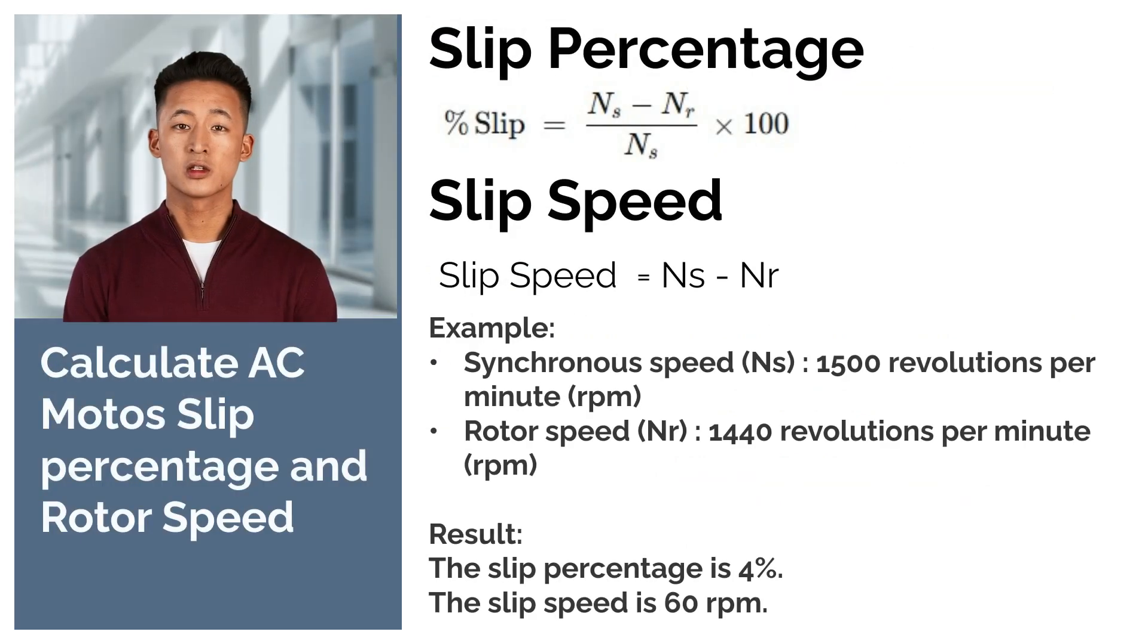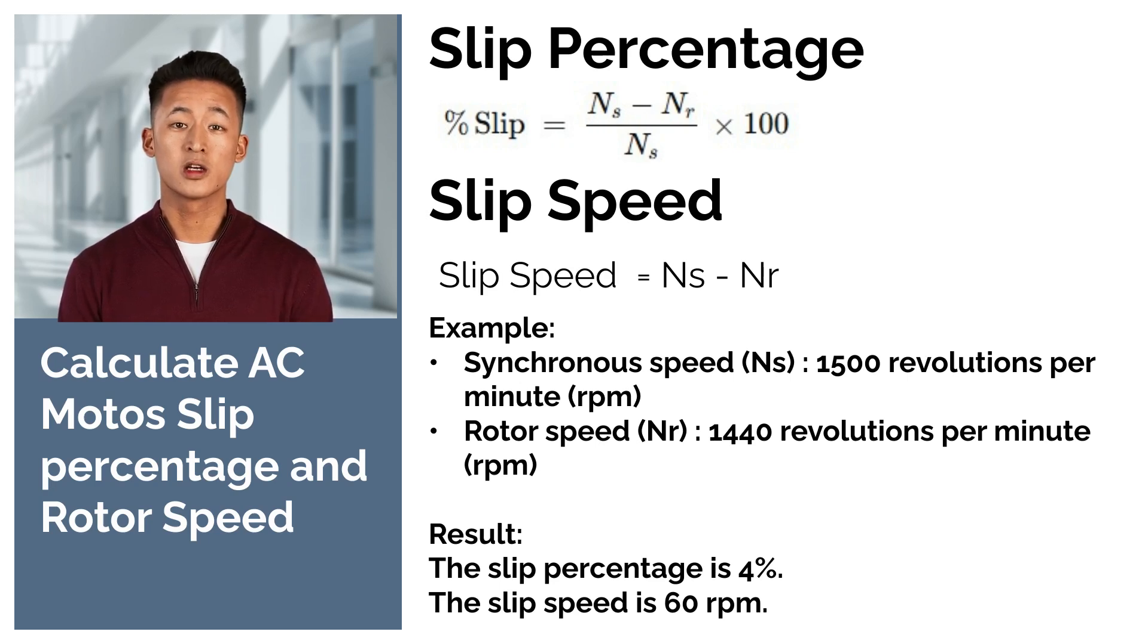In this section, we'll learn how to calculate the slip speed, slip percentage, and rotor speed in an AC motor. Calculating the slip percentage and slip speed is straightforward. Simply substitute the values for ns and nr into the formula, and you'll get the answer. Feel free to pause the screen and verify the example result yourself.